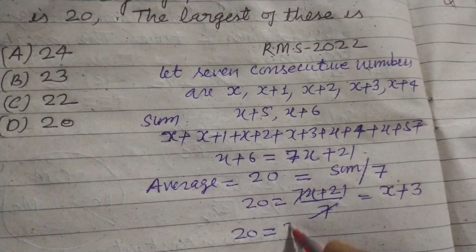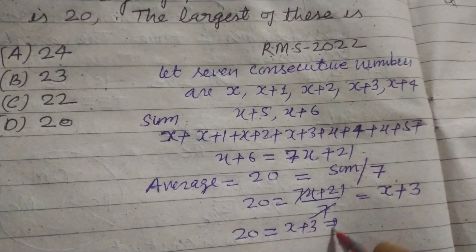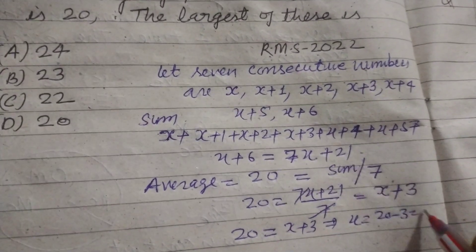So 20 = x + 3, which means x = 20 - 3 = 17.